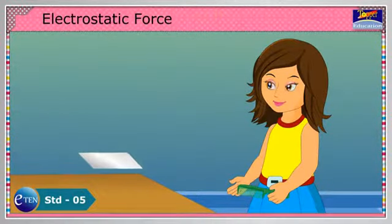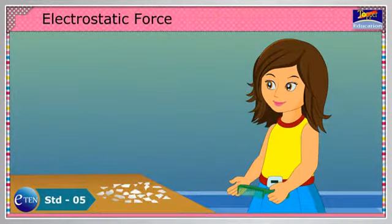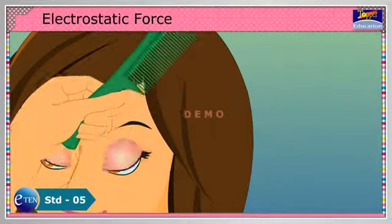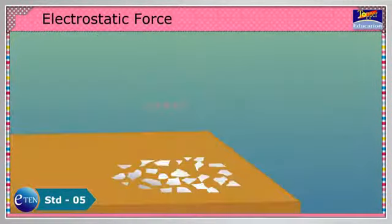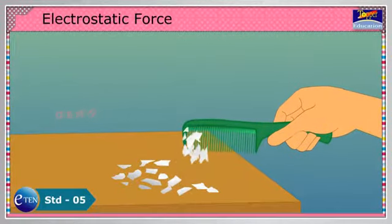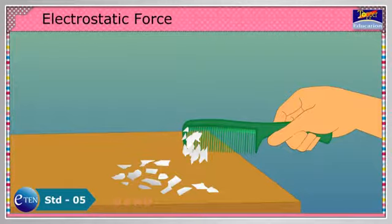Shred a paper into tiny pieces. Take a comb and comb your dry hair. Now, bring the comb to the pieces of paper. What do you observe? The paper pieces get attracted and stick to the comb because of electrostatic force.